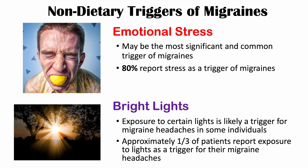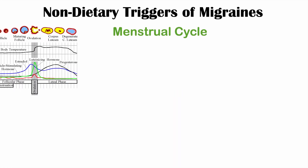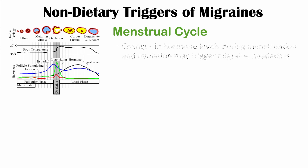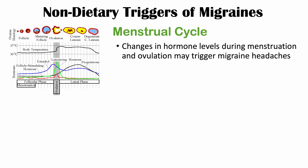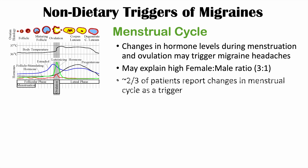We can also see some biological triggers of migraines. The menstrual cycle in women can lead to changes in hormone levels during menstruation and ovulation that may trigger migraine headaches. This may be the reason why the female to male ratio of migraine headaches is 3 to 1 — females outnumber males 3 to 1. Upwards of two thirds of female patients report changes in their menstrual cycle as a trigger.